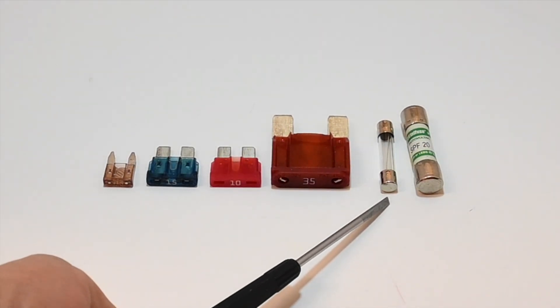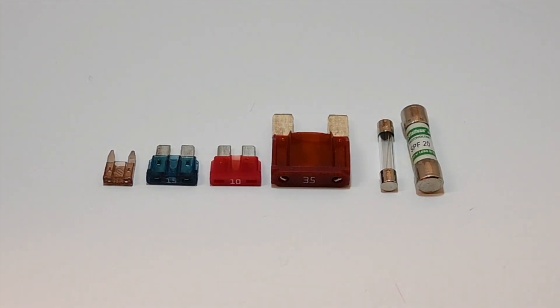Glass cartridge fuses such as the AG style can also be found in RVs. AG originally meant all glass but AG is now used for most cartridge type fuses.